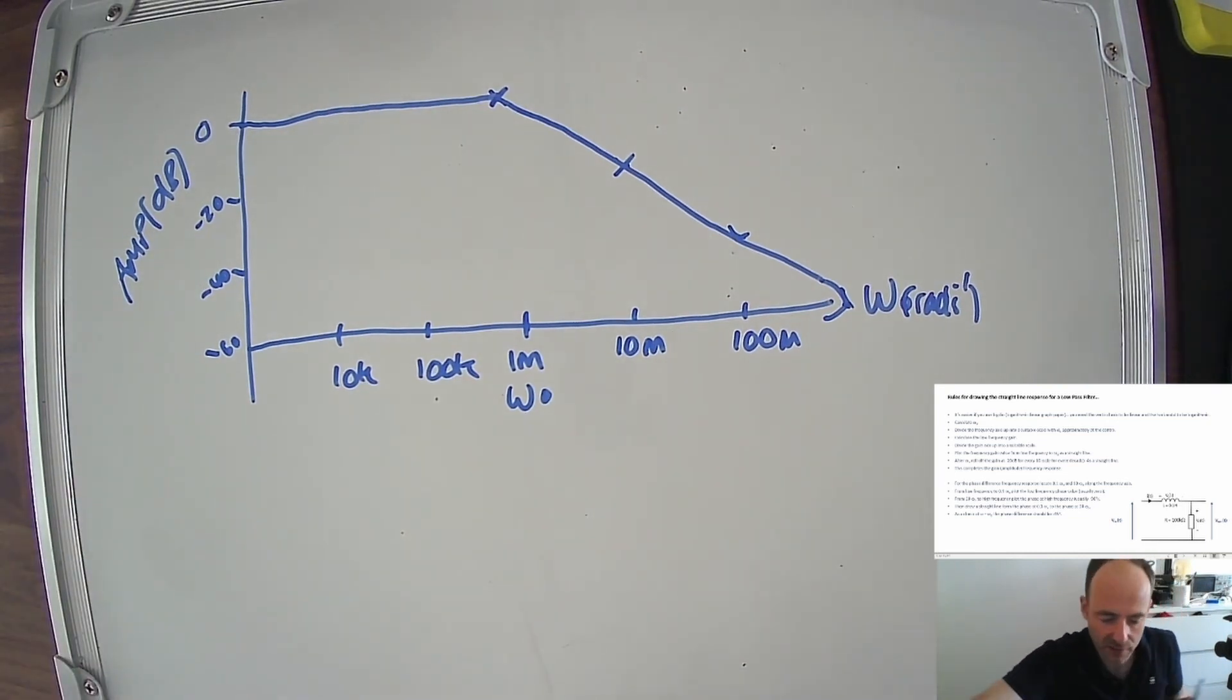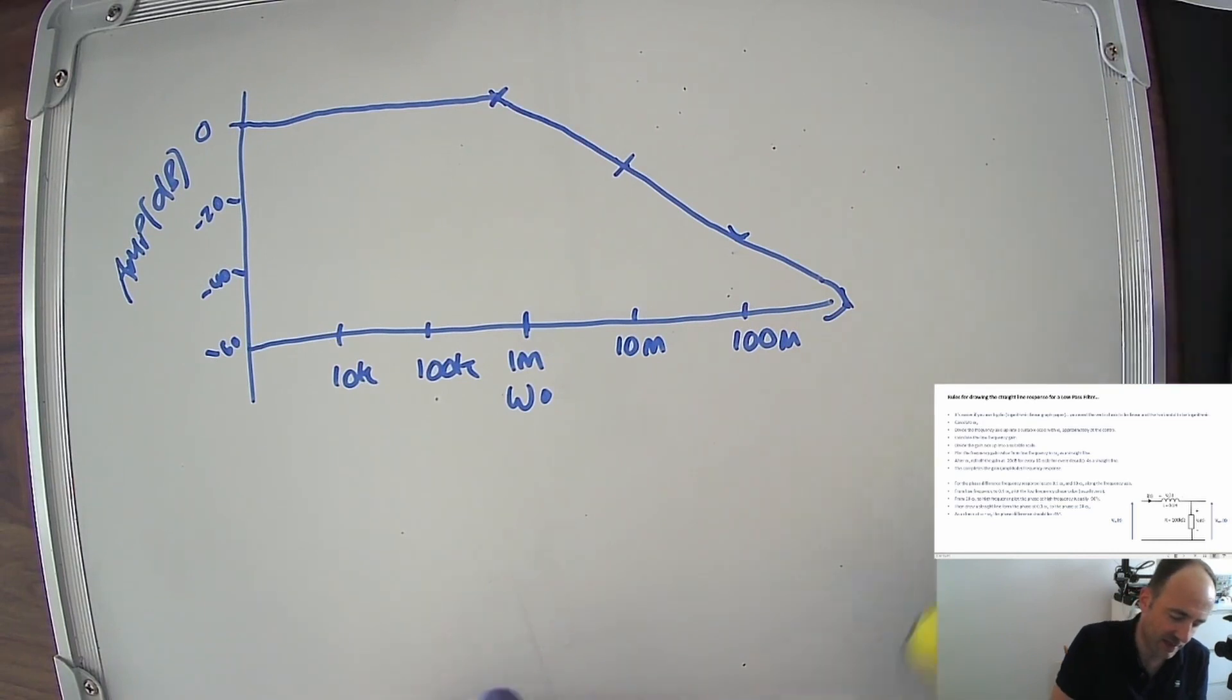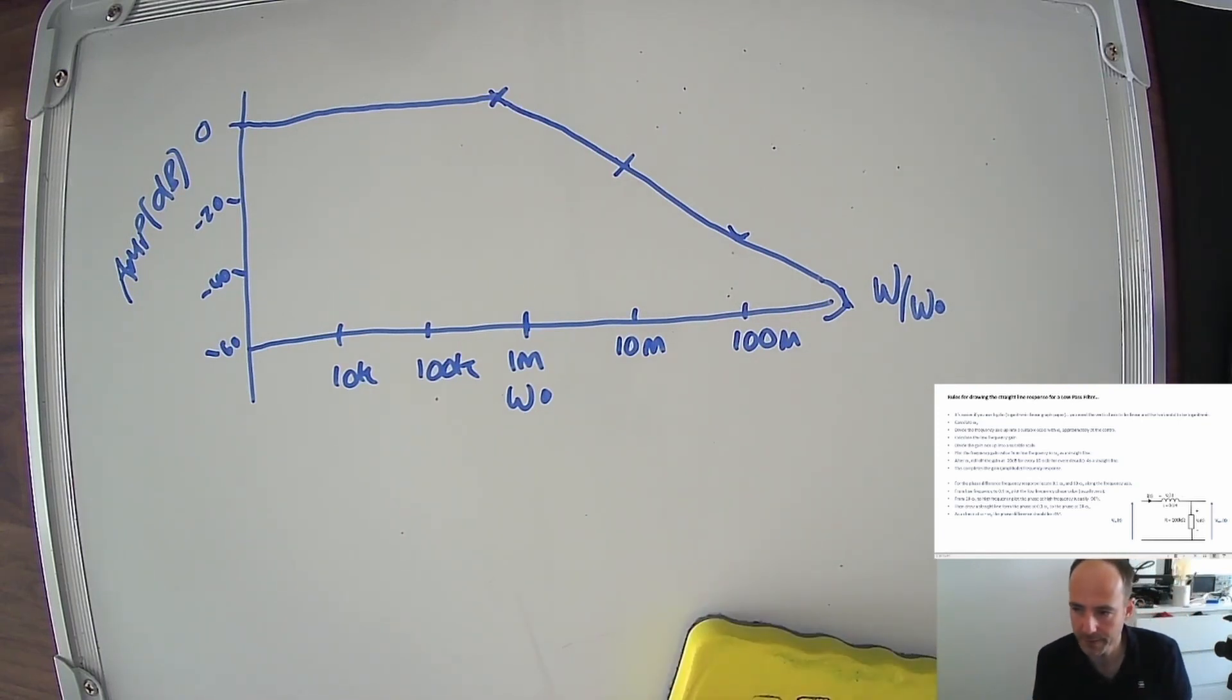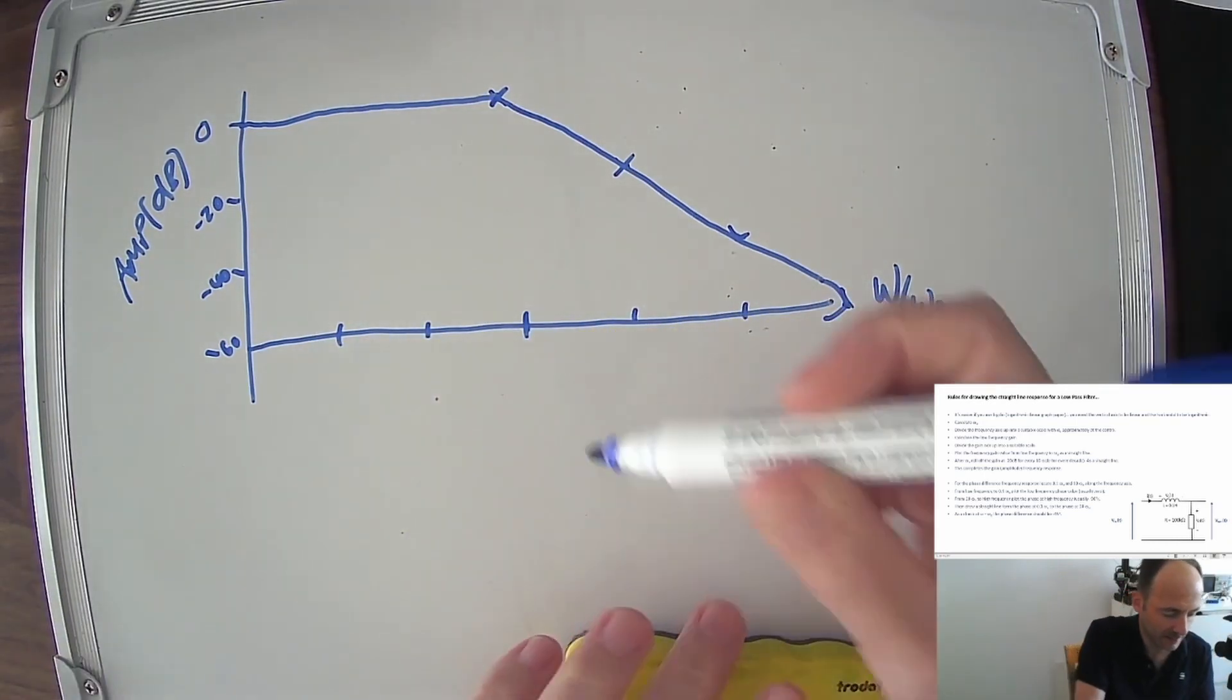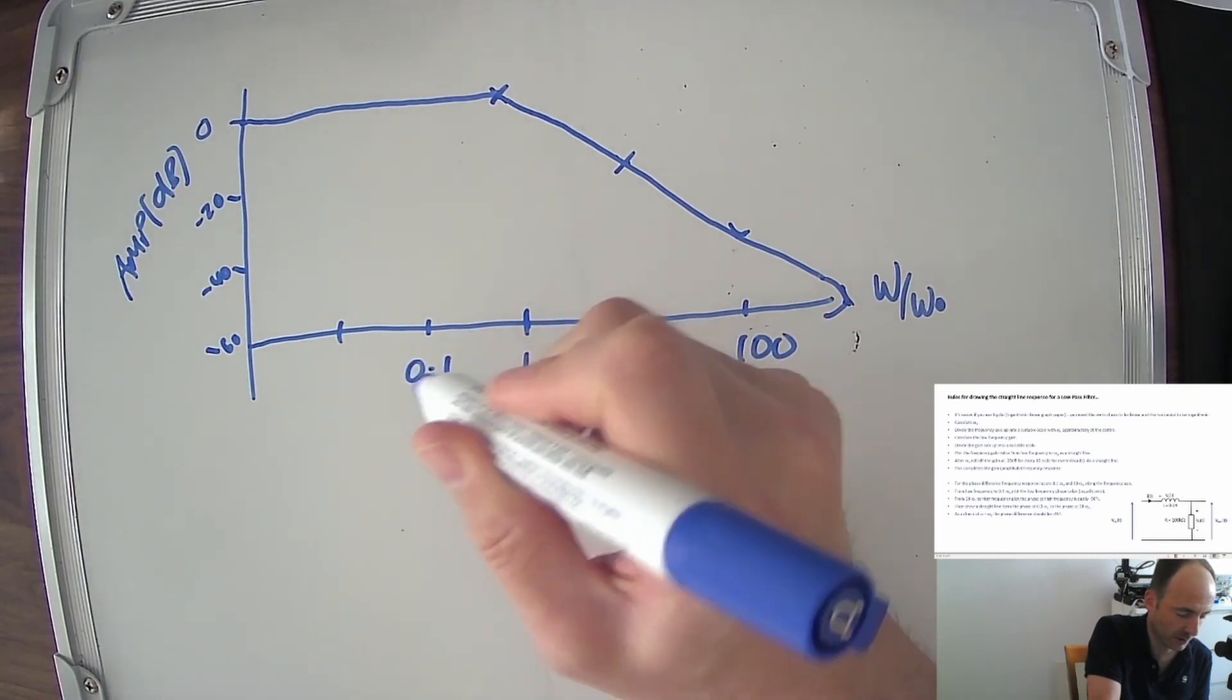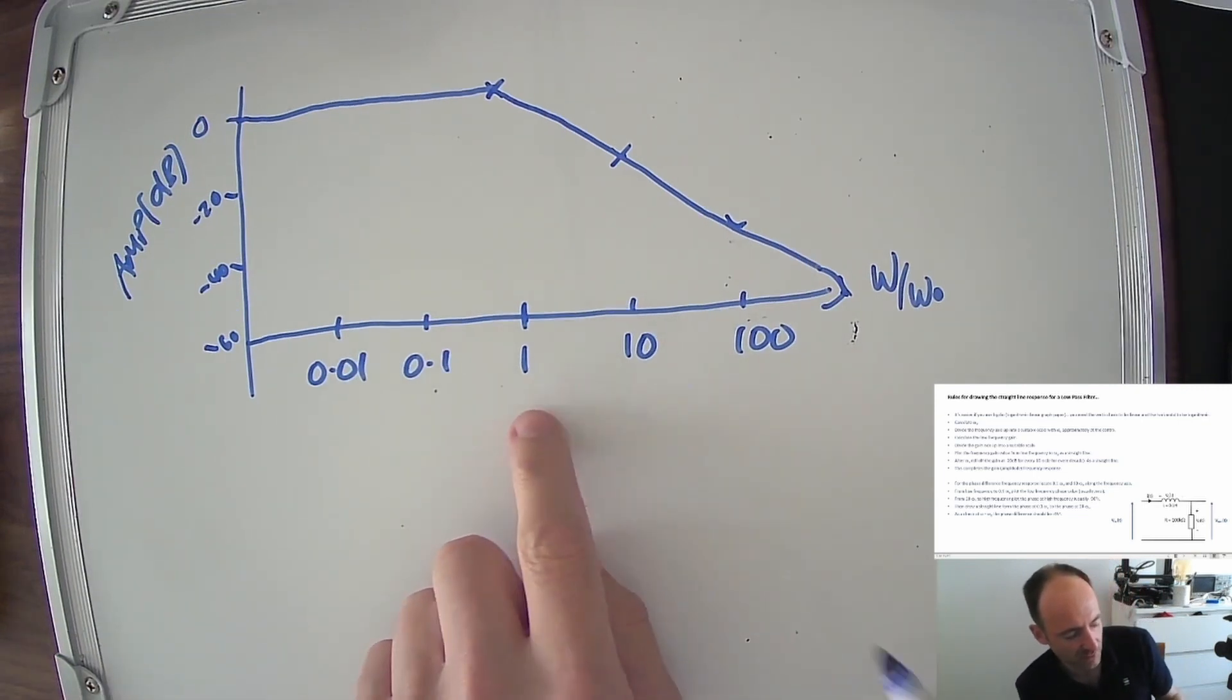We'll do the amplitude response in a minute. But I just want to talk about a little trick that makes things easier. Okay, let's look at our x axis now. And let's not make it in terms of omega. Let's make it in terms of omega divided by the cutoff frequency. Okay, so we're basically normalizing this axis. So if our cutoff frequency, we already know what it is in this problem, it's 1 million, we're basically dividing all these numbers by 1 million. When we do that, this becomes 1, this becomes 10, this becomes 100, this becomes 0.1, this becomes 0.1, like that.